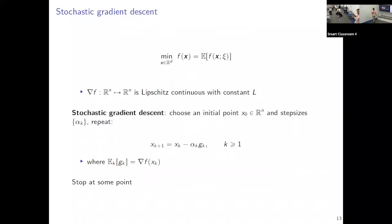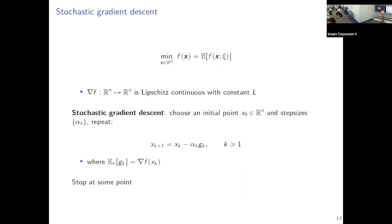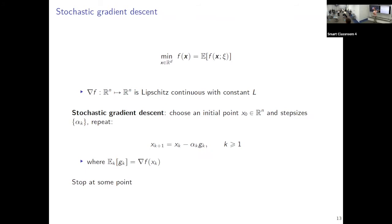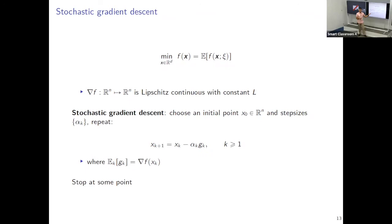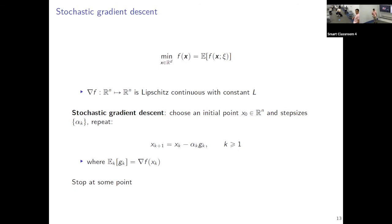If we move to the stochastic case, things are a bit more tricky from the analysis point of view. From the algorithm point of view, the setting is the same: we have some objective to minimize, its gradient is Lipschitz continuous, the algorithm is the same as before. But rather than updating iterates using the true gradient, we have some estimate of the gradient — something that in expectation equals the gradient.